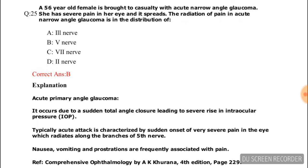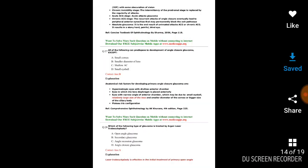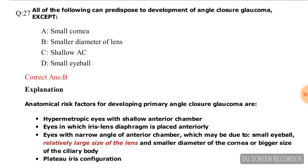Question number twenty-five: A 56-year-old female is brought to casualty with acute narrow angle glaucoma. She has severe pain in her eye. The radiation of pain in acute narrow angle glaucoma follows the distribution of which nerve? Options are third nerve, fifth nerve, seventh nerve, or second nerve. The correct answer is option D, the fifth nerve.